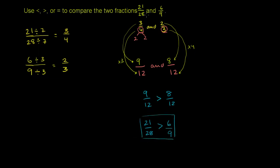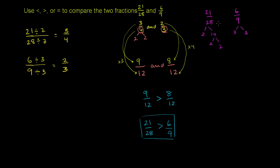Another way we could have done it is without simplifying first. Starting with 21/28 and 6/9, we find the LCM the traditional way. The prime factorization of 28 is 2 times 2 times 7, and the prime factorization of 9 is 3 times 3. Since they share no prime factors, the least common multiple is essentially 28 times 9.